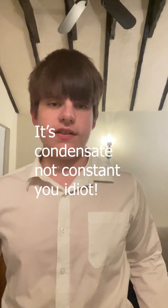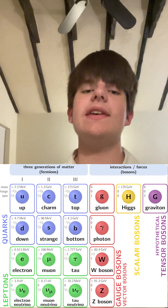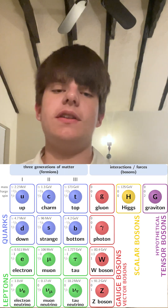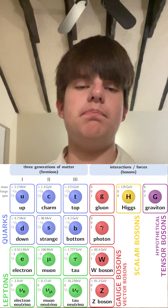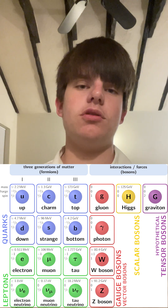A Bose-Einstein constant has to do with, of course, bosons, and they are some of the elementary particles that our universe is comprised of at its most basic level. But how are they different to any other state of matter?